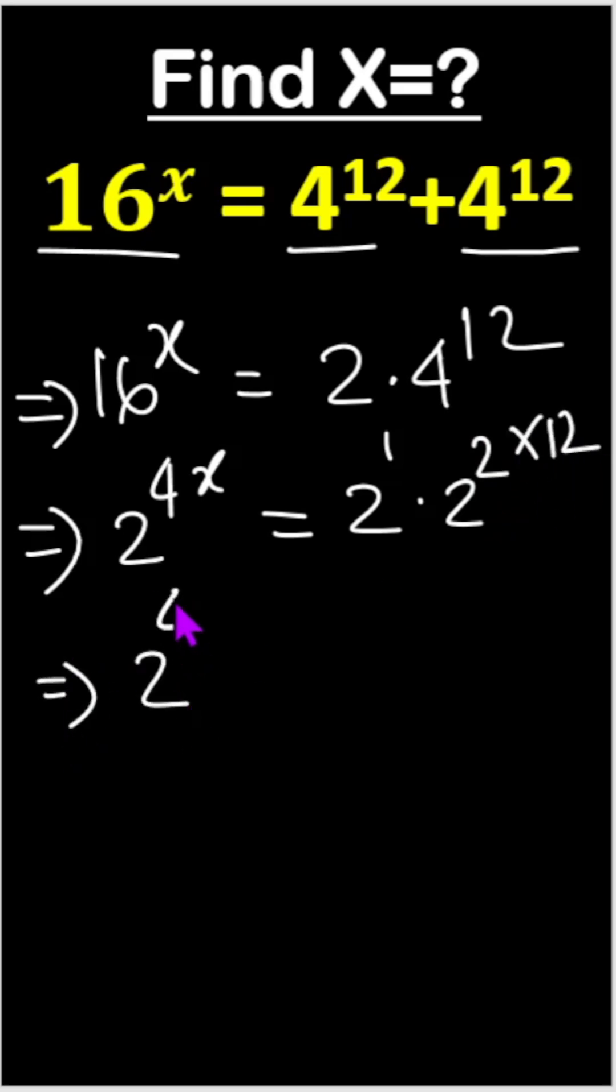Now, 2 to the power 4x equals 2 to the power... once bases are the same, in a product, powers will be added. It means 1 plus 2 times 12 means 24.